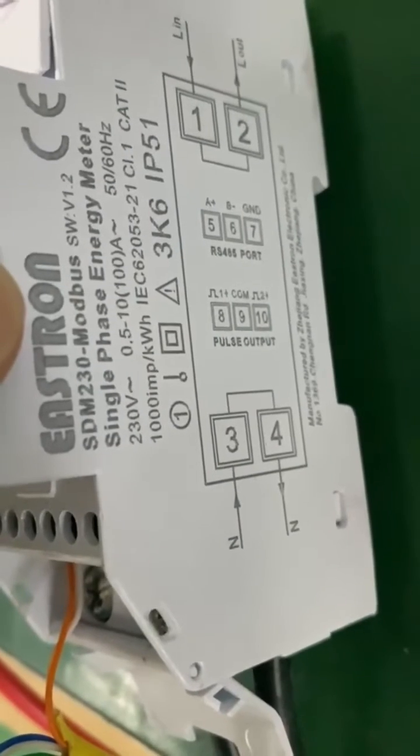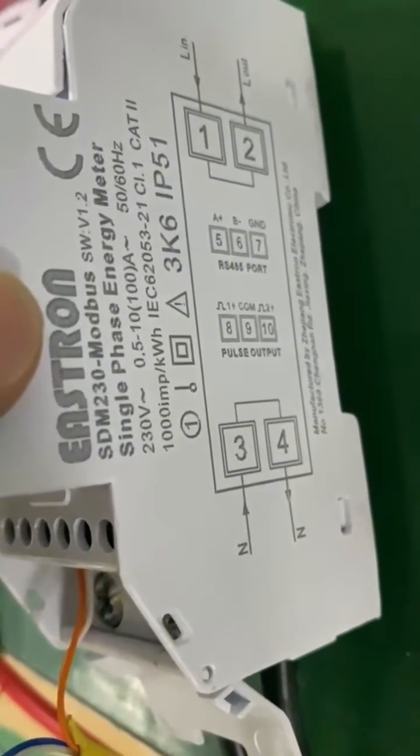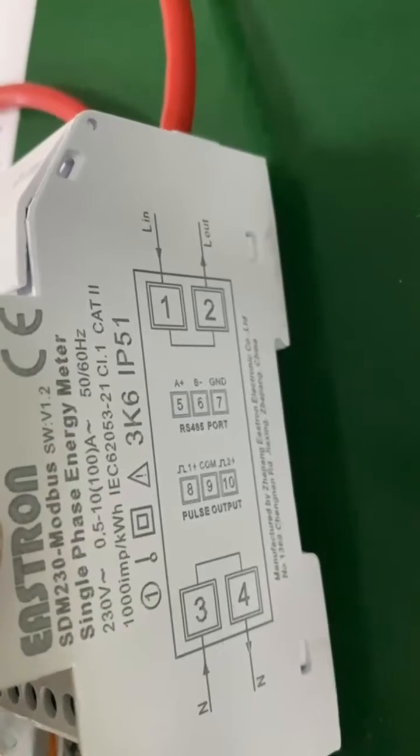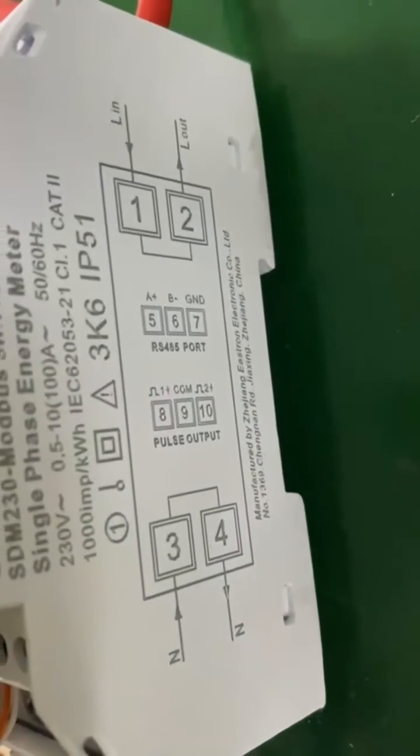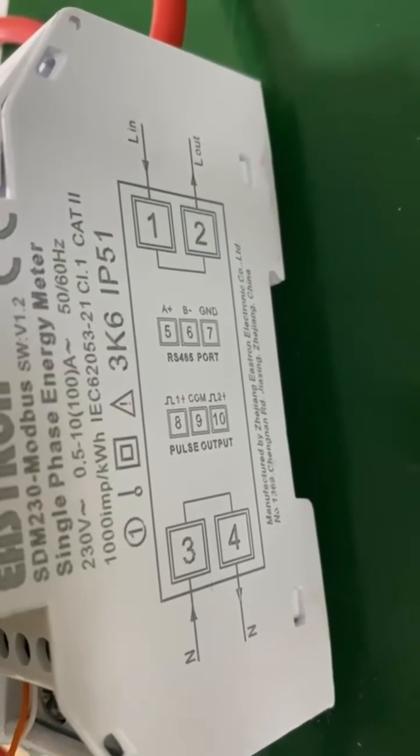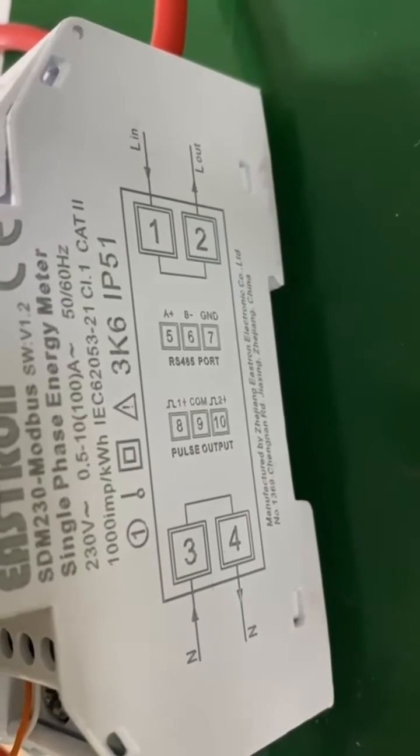It shows you terminal 3 and terminal 4 are for the neutral. Terminal 1 and terminal 2 are for the live line. And for the RS485 port, it's terminal 5 and terminal 6.